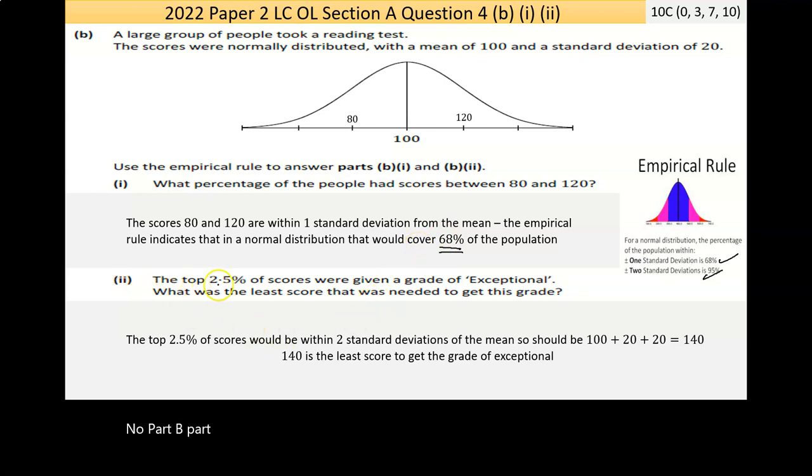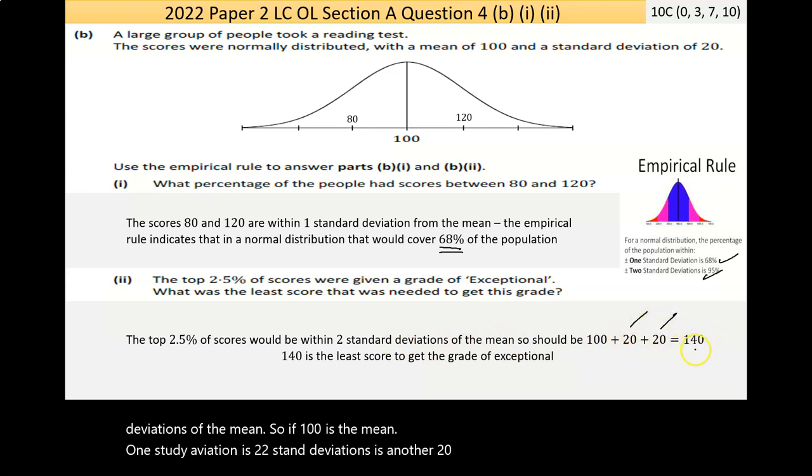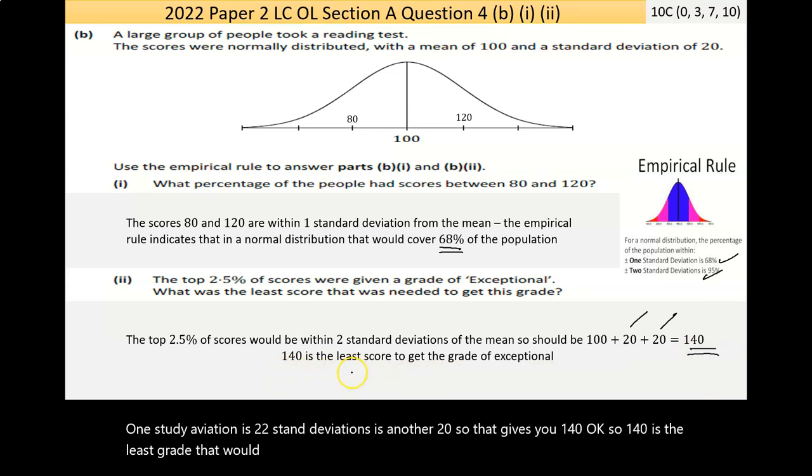Part B2 says the top 2.5% of scores were given a grade of exceptional. What was the least score that was needed to get this grade? The top 2.5% of scores would be within two standard deviations of the mean. If 100 is the mean, one standard deviation is 20, two standard deviations is another 20, so that gives you 140. So 140 is the least grade that would be needed to get the score of exceptional.